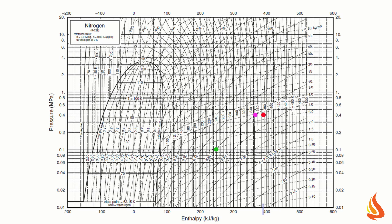This state is represented by the red dot on the diagram. This point is somewhat to the left of the 380 K isotherm, so we will take 375 K as an approximation.